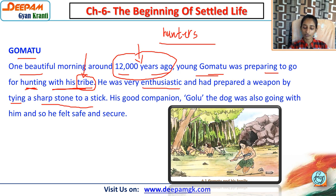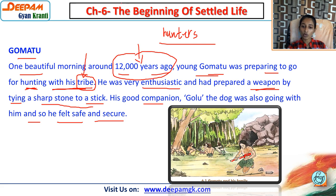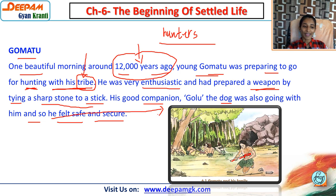He had prepared a weapon - 'hathyaar' - by tying a sharp stone to a stick. His companion, Golu the dog, was also going with him, and so he felt safe and secure. From that time we can see the importance of dogs as faithful companions.